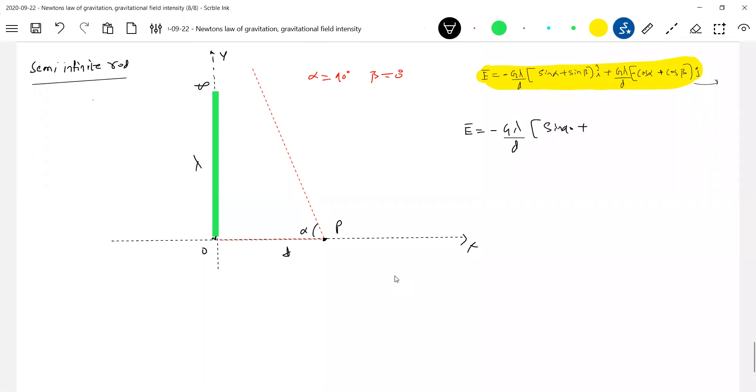...sin 90, sin 0, i cap, cos 90 plus cos 0 degrees j cap. This will be minus g lambda d i cap...